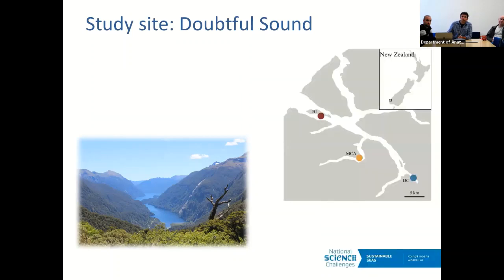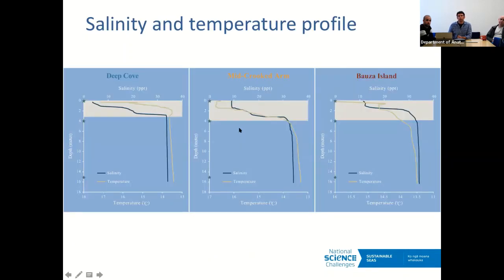Samples were taken at three different long-established monitoring sites: Steep Cove, Mid-Crooked Arm, and Bauza Island, at different distances from the open ocean. At all three sites there is a freshwater layer at the top going to roughly four metres, with increasing salinity from top to bottom, and from about four metres you have proper seawater.